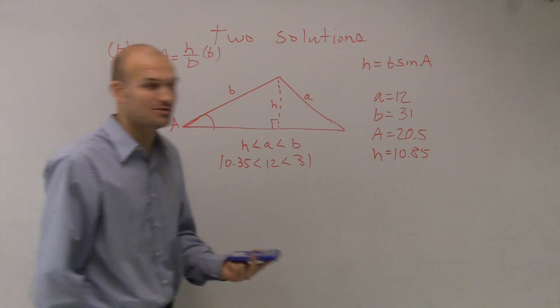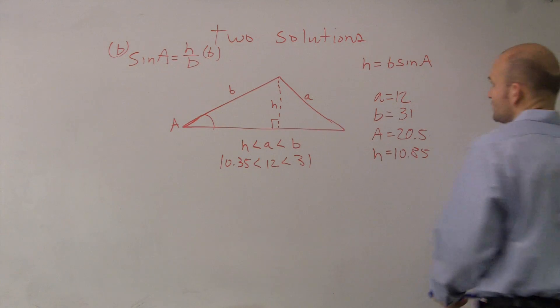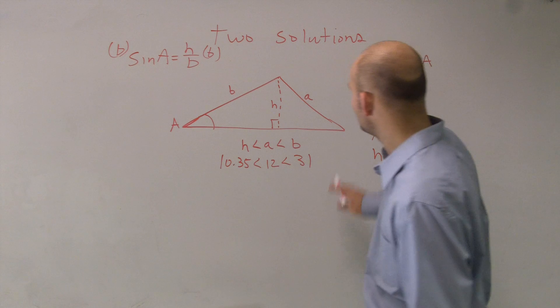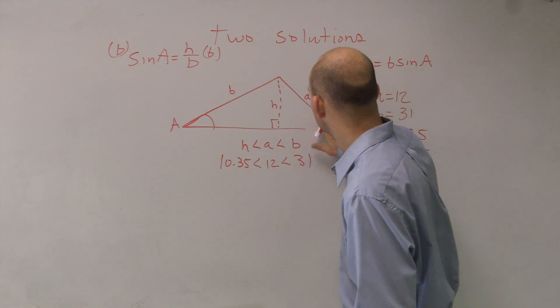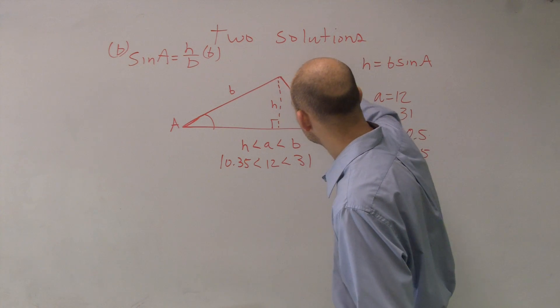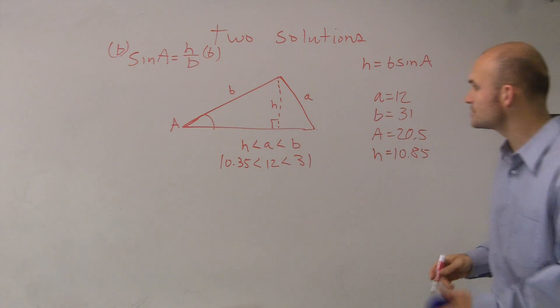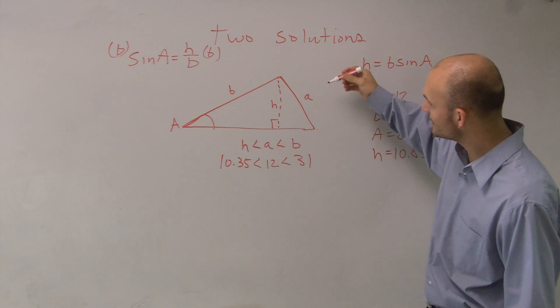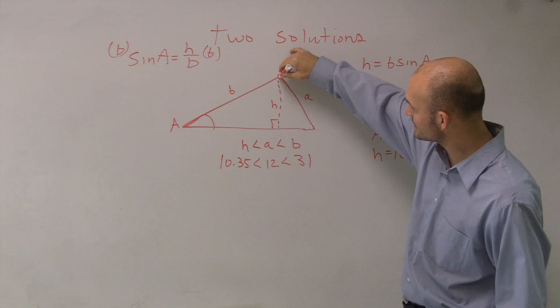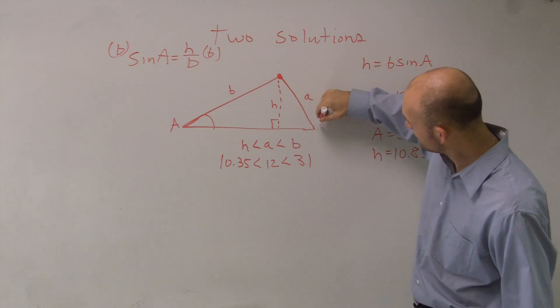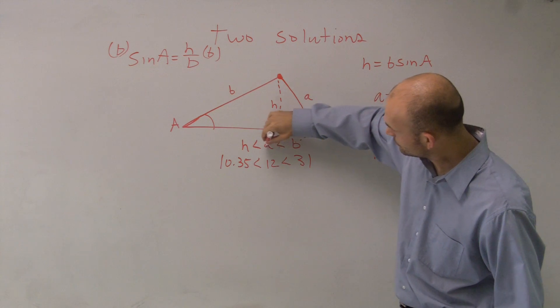So why does this have two solutions? Well, the important thing to understand, and I didn't really draw a good picture here, let's draw this A like this. The reason why this has two solutions is if you were to think of this as like a hinge,